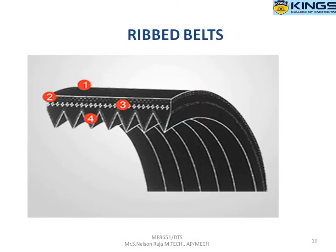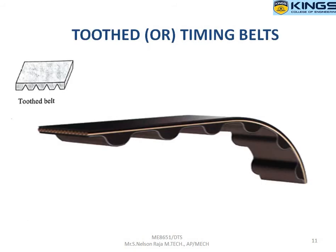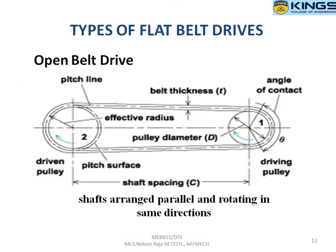A ribbed belt combines both flat belt and V-belt characteristics. The top surface is flat and the bottom surface has multiple V-belt sections combined together — that is the ribbed belt. A toothed or timing belt is similar, with the top surface flat but the bottom surface having a curved, U-shaped profile rather than a V-shape. That is called a toothed or timing belt.